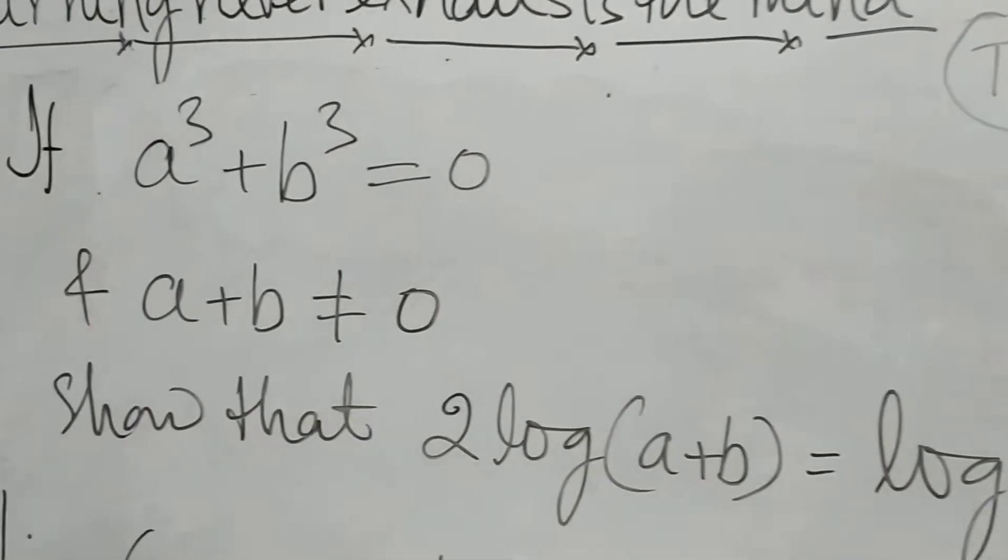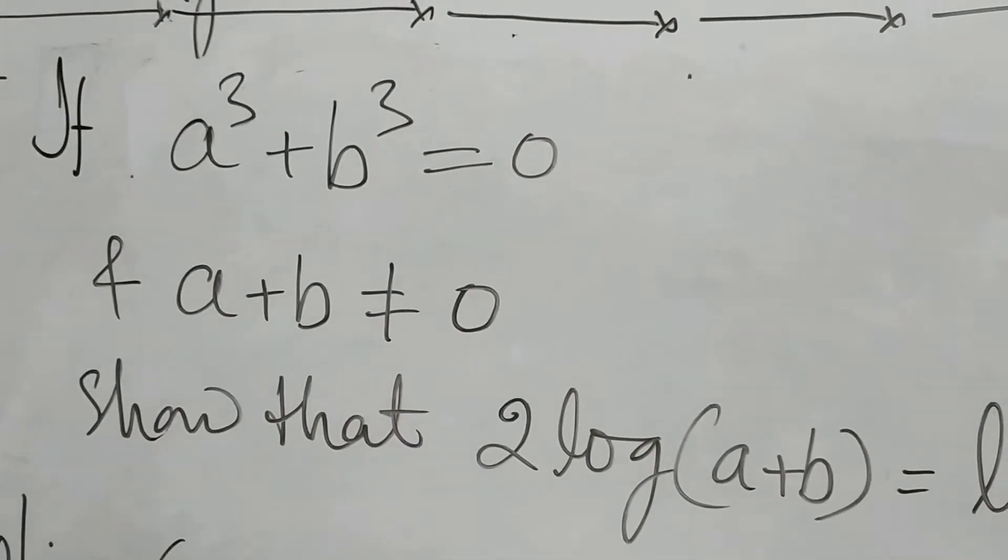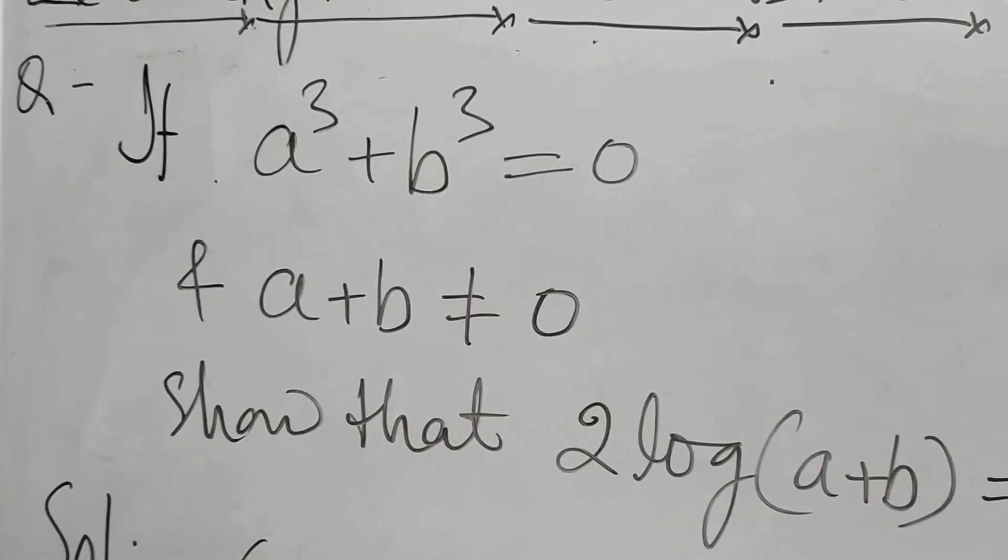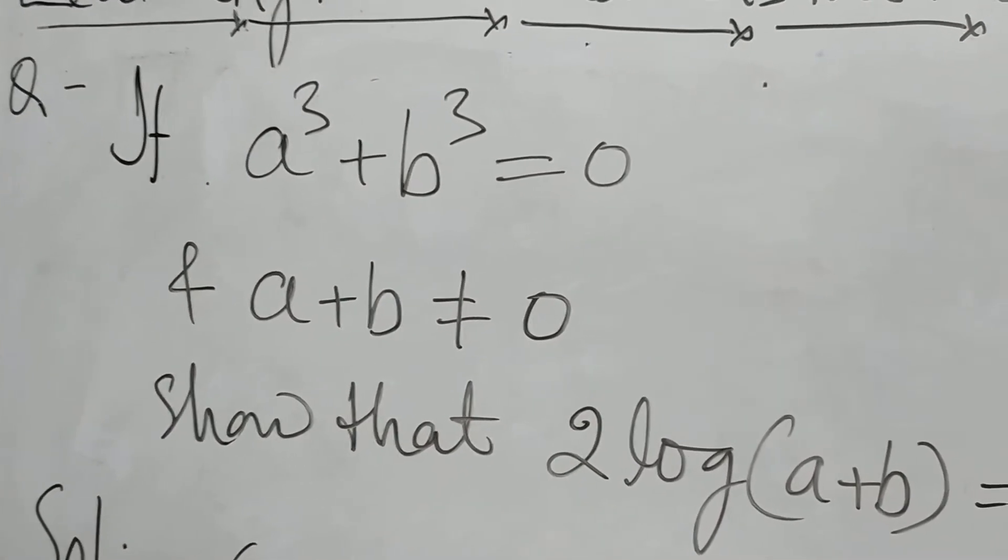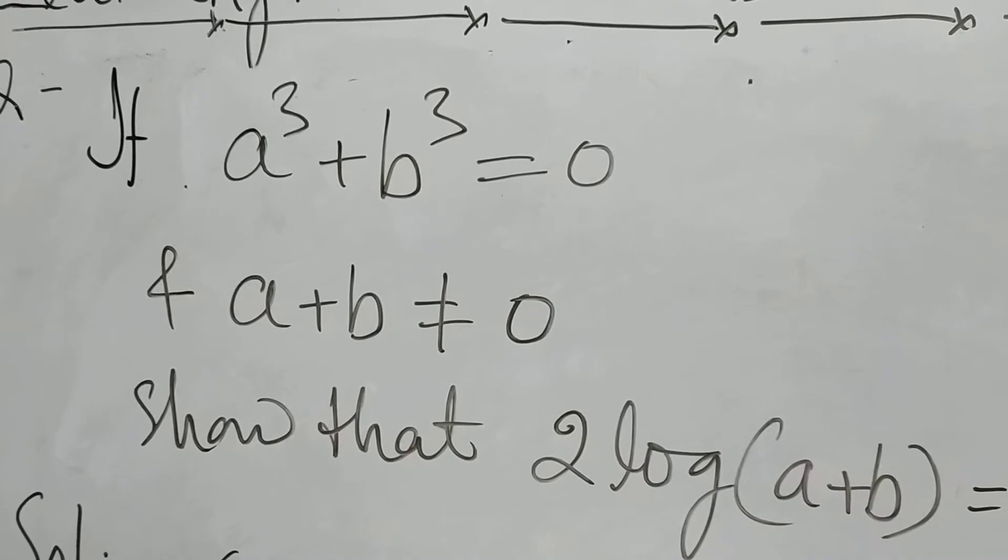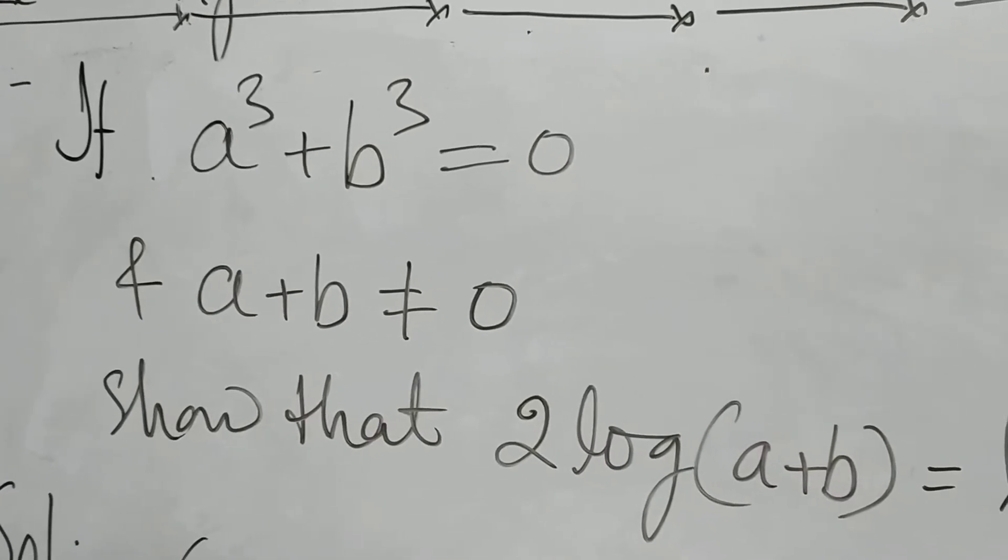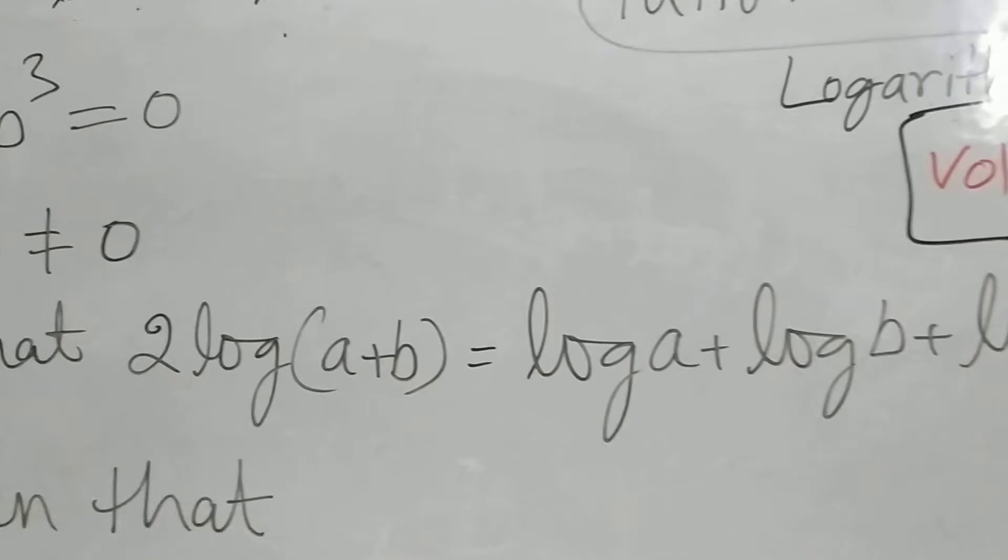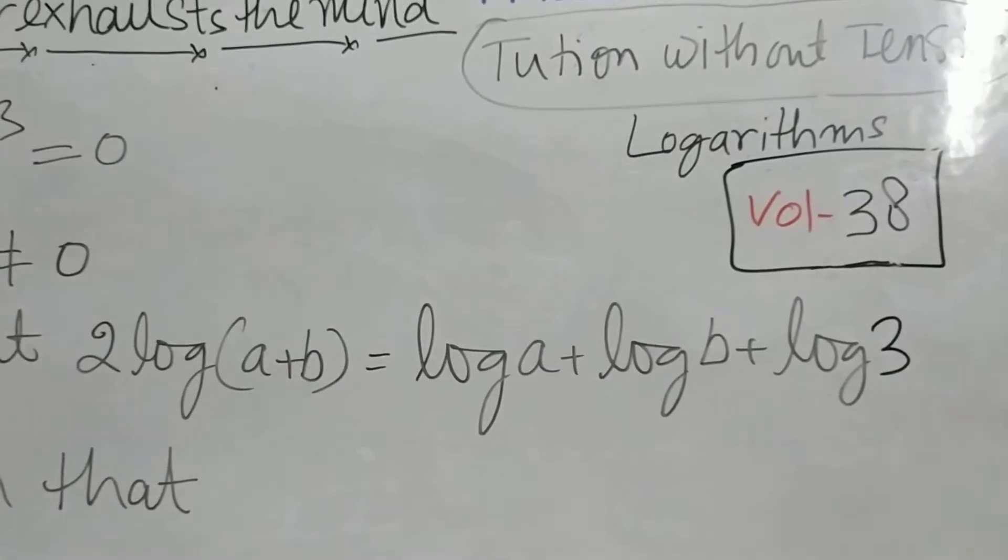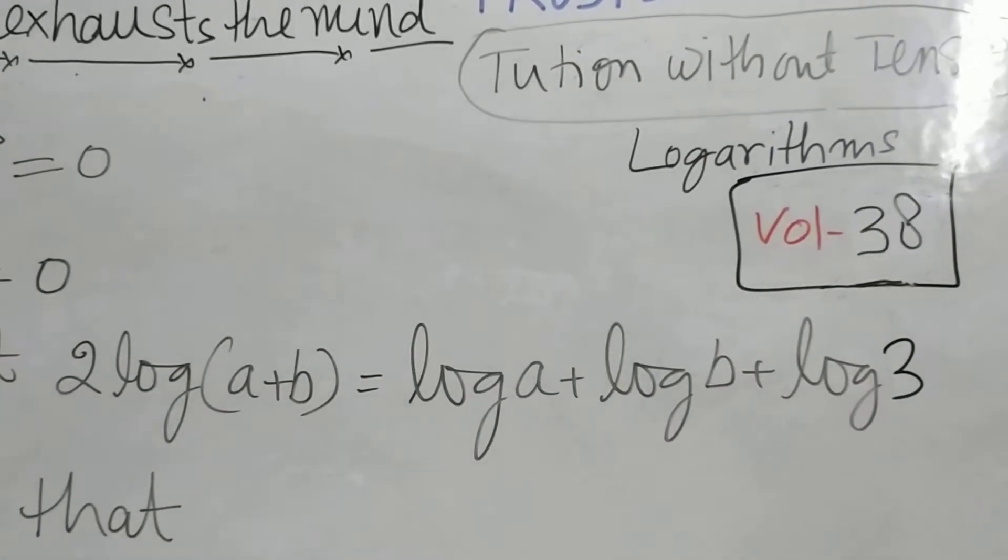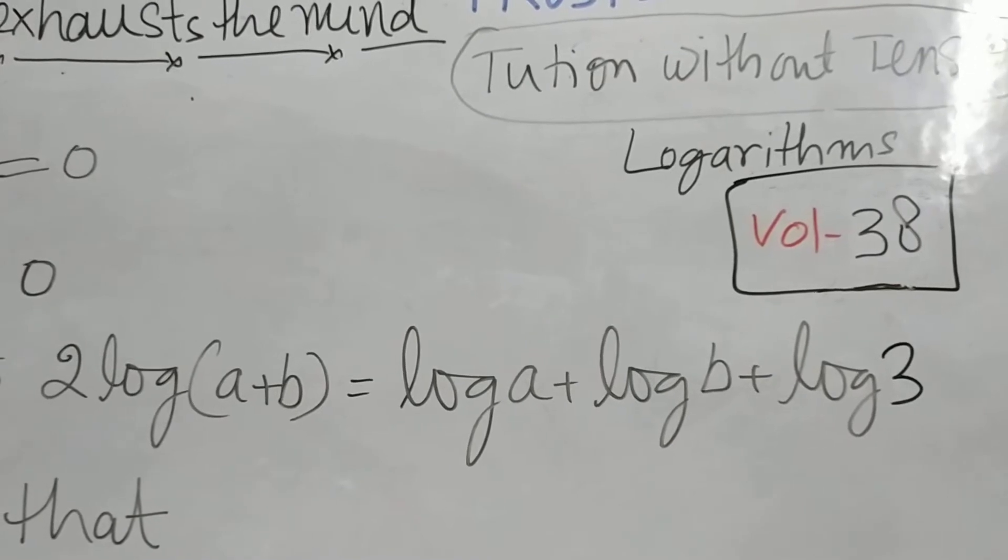See the question: if a³+b³=0 but a+b≠0, then you have to show that 2log(a+b)=log a+log b+log 3.